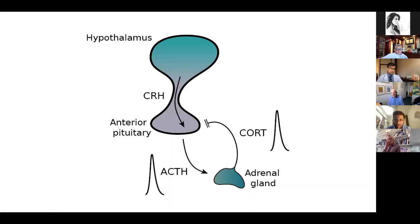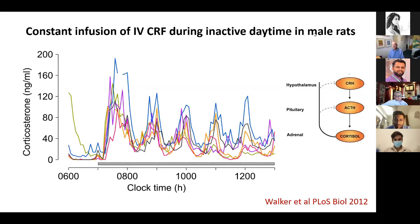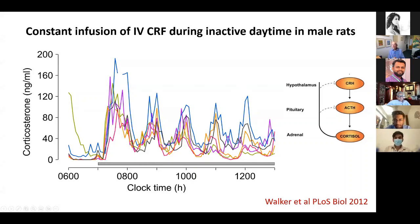Because cortisol can't be stored, when ACTH hits the adrenal gland, it has to synthesize new cortisol. The newly synthesized cortisol then travels around the body and turns off the pituitary gland. So you have a feed-forward and feedback system with a delay in it, and mathematically any feed-forward feedback system with a delay must oscillate. We demonstrated this by infusing a constant level of CRH into rats during a period when they were producing no corticosterone at all — with no pulses in the input, just constant CRH stimulation.